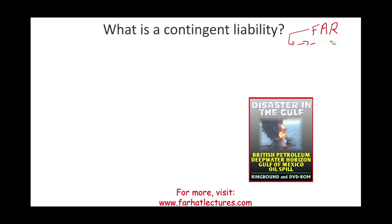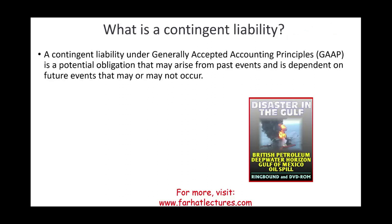We're going to start by reviewing what is a contingent liability. A contingent liability is a potential liability under GAAP that may arise from a past event and is dependent on a future outcome that may or may not occur. Something happened in the past and because of that event, we might have an obligation or a liability into the future, and that liability may or may not happen depending on certain events.